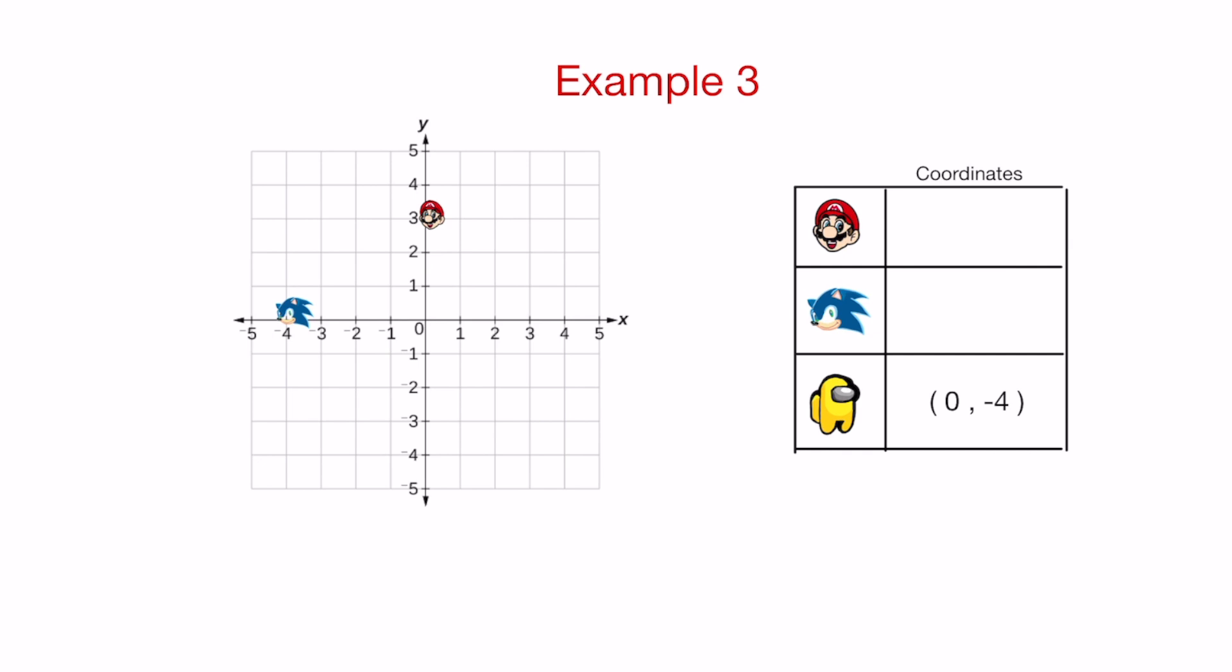Example three is one of the things that confuses people the most. And here is the easiest way to do this. Mario is right on the y-axis. If you look at him, he's on the y-axis and he is at number three. That is the number that you're going to put. So if he's on the y-axis, you're going to put three for the letter y and the other one will just be zero. That is it. That is it. That's the easiest way for me to explain this.